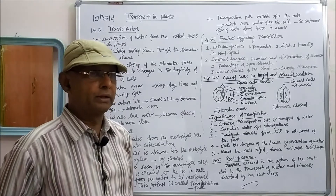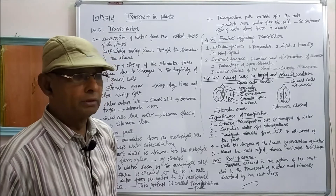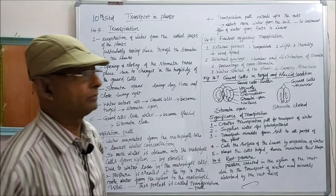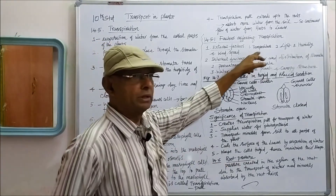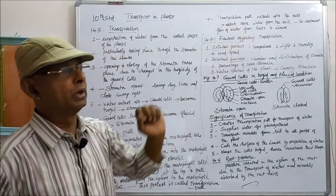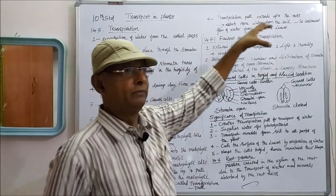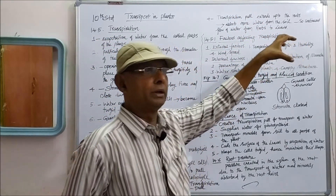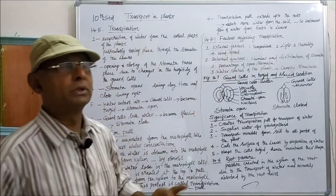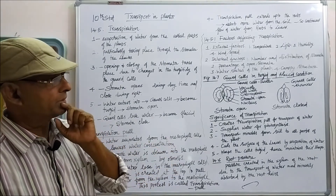Temperature, light, humidity, and wind speed will each increase or reduce transpiration according to the factor. More temperature will evaporate more water molecules from the surface of the leaf, as will light. If there is humidity in the air, that will reduce the transpiration. Wind speed also determines the evaporation of water molecules from the surface of the leaf.